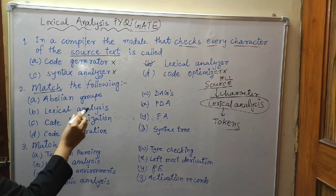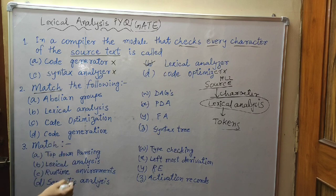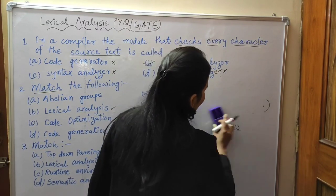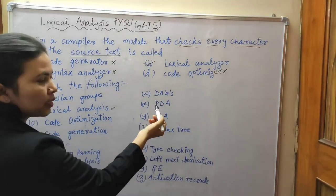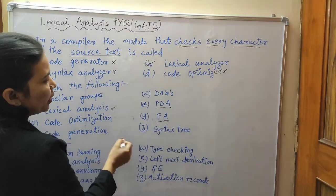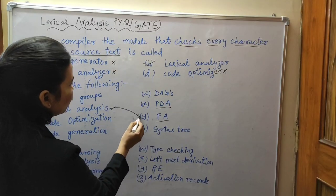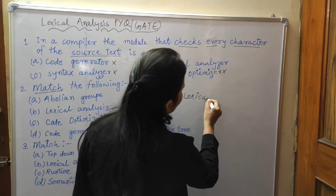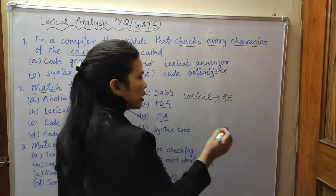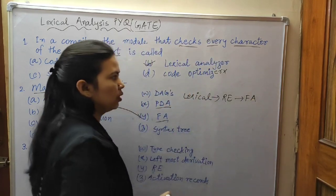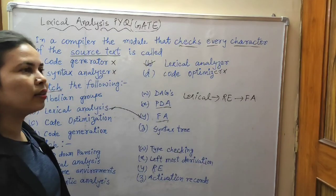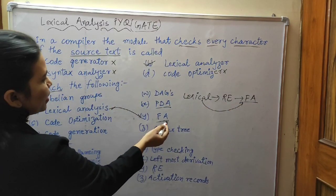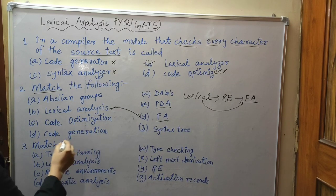Question two: Match the following — lexical analysis, code optimizer, code generator. The options given are DAGs (directed acyclic graph), PDA (pushdown automata), finite automata, and syntax tree. Lexical analysis maps to finite automata because in the lexical analysis phase we use regular expressions, and the machine used for regular expressions is finite automata.